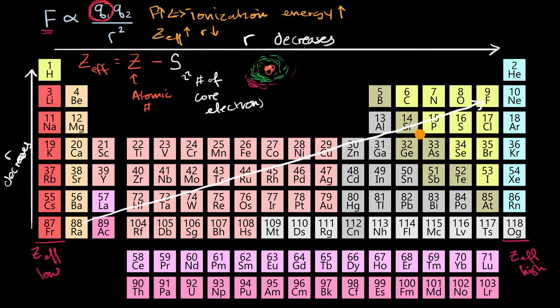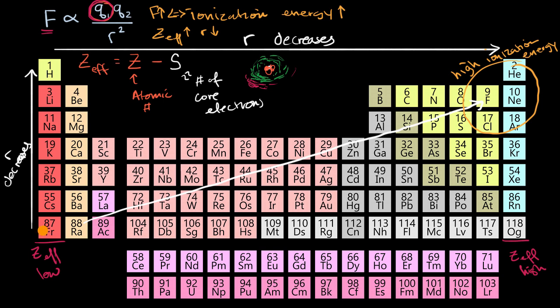The lowest radii are in the top right and the highest effective charge is also on the right, so you'd expect the highest ionization energies in the top right. This makes intuitive sense: noble gases are very stable and don't want to release an electron, so it takes a lot of energy. Fluorine and chlorine are so close to completing a shell, the last thing they want to do is lose an electron. On the other hand, francium has one valence electron far from the nucleus, with low effective charge due to all the shielding from core electrons — so it doesn't take much energy to remove that first electron.